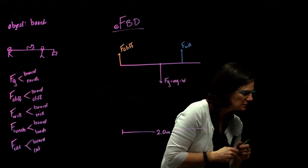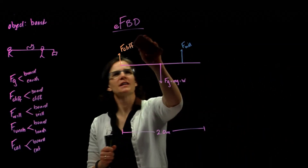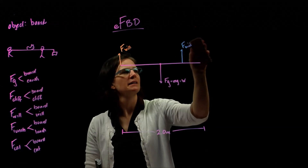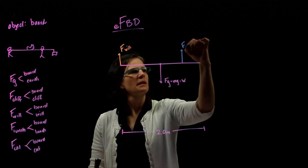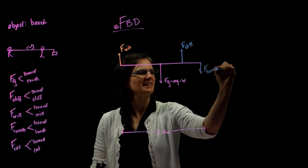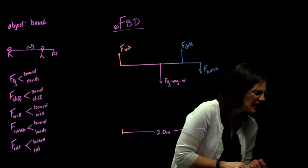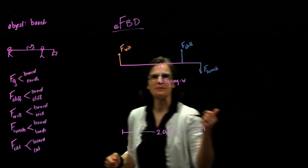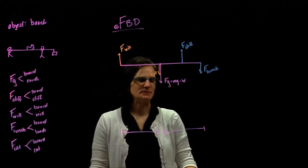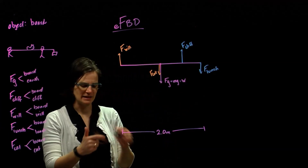Will is supporting the board at his end, and Cliff is at the other end with his lunch hanging off. Here is the force of the lunch hanging straight down at the very end of the board. Then we have Will's cat, which is sitting directly in the middle of the board, so here is the force of the cat pushing down right in the middle. That gives us five forces total, and all five must show up on our extended free body diagram.